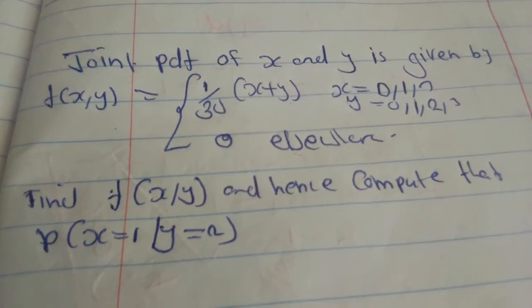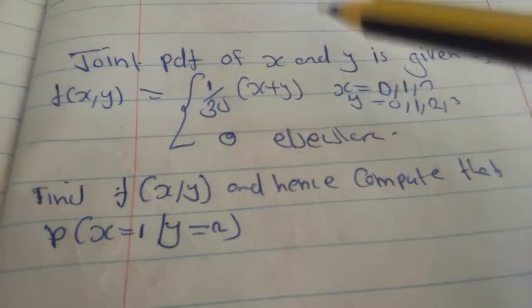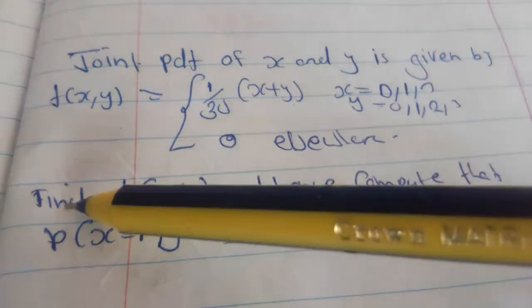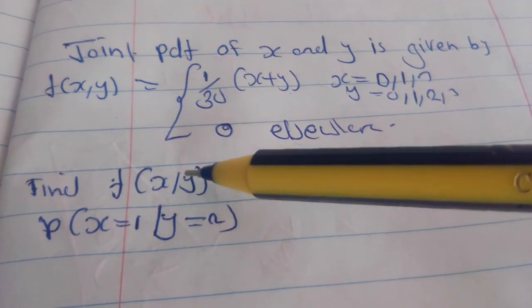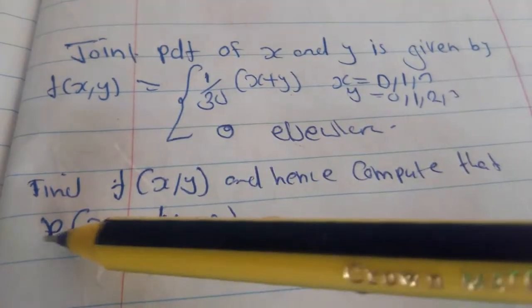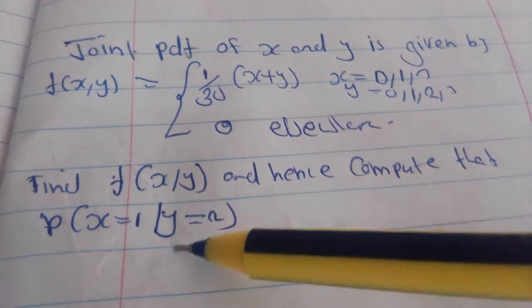The joint pdf of x and y is given by a function f(x,y) which equals this expression. We are given the joint pdf of x and y. Find the function f(x|y) and compute the probability that x equal to 1 given y equal to 2.